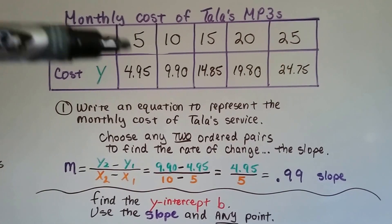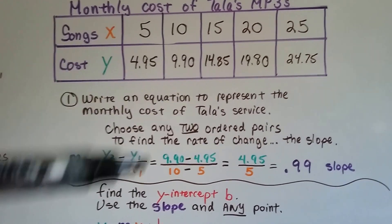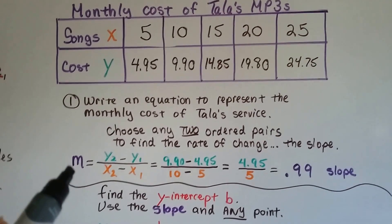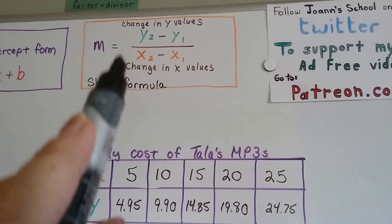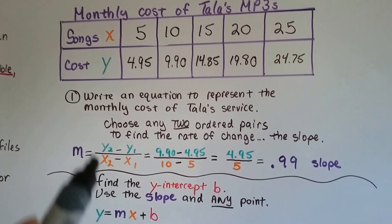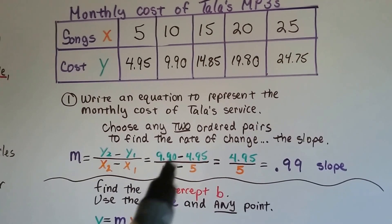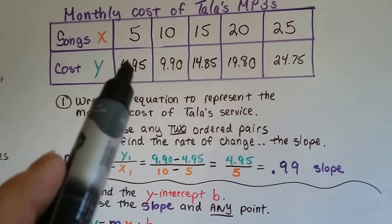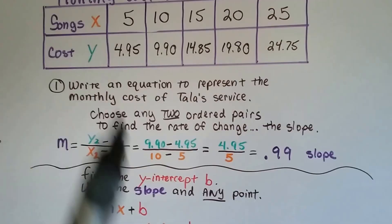This is going to be x1, y1, and x2, y2. I'm going to use slope formula, and we're going to find the change in y values over the change in x values. And then the m is going to give us the slope. So we have 9.90 take away 4.95, and 10 take away 5.